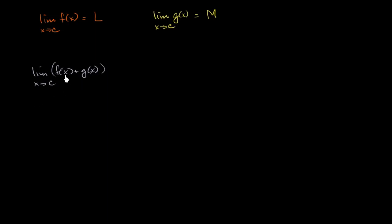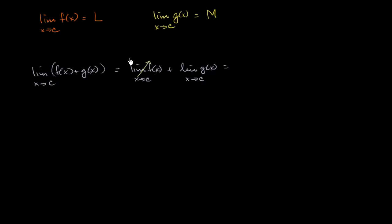You could look at this visually — if you look at the graphs of two arbitrary functions, you would essentially just add those two functions. It'll be pretty clear that this is going to be equal to the limit of f of x as x approaches c, plus the limit of g of x as x approaches c, which equals L plus M. This is often called the sum rule or the sum property of limits.